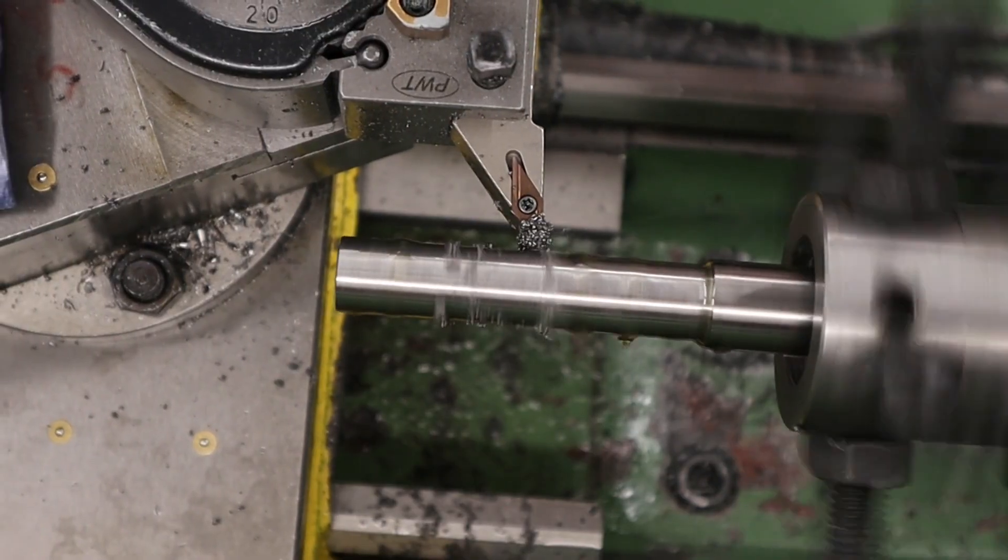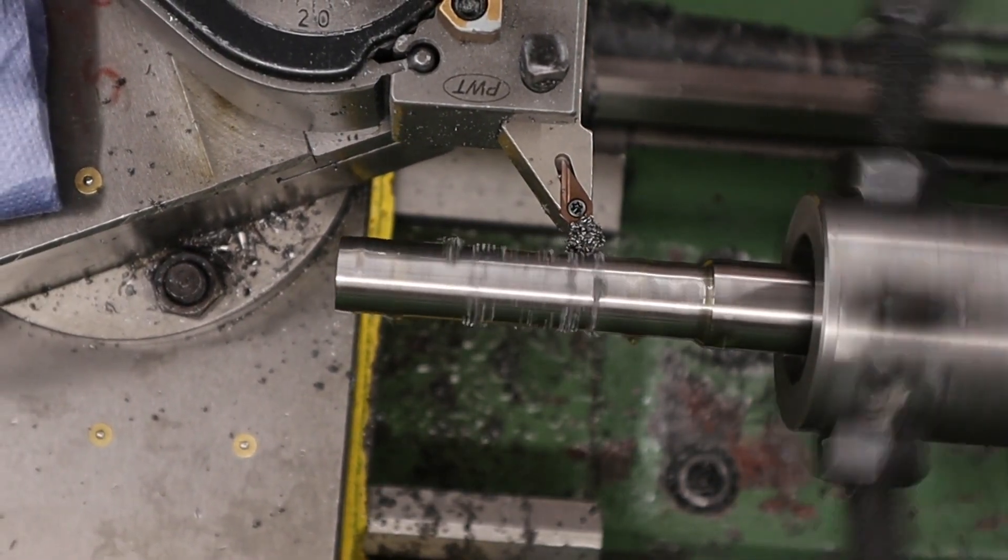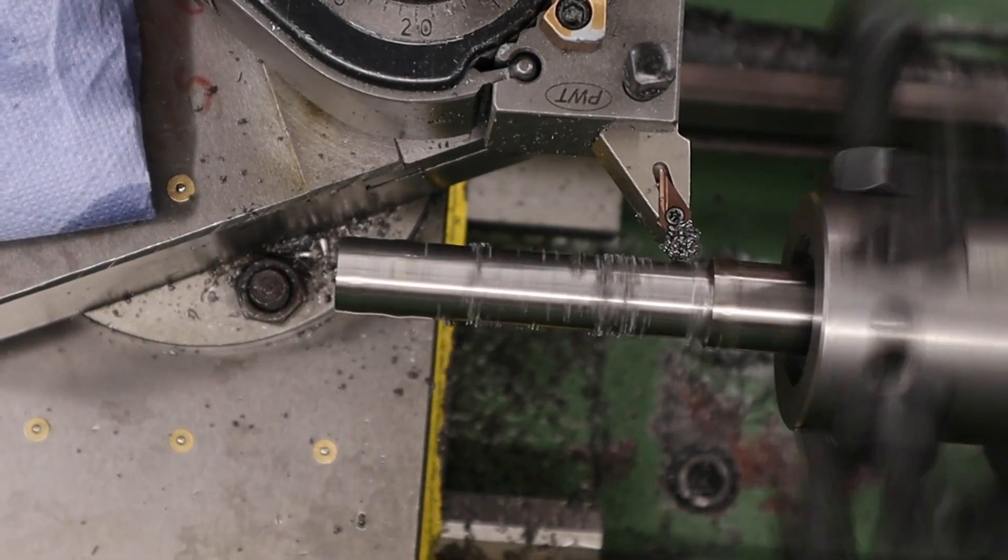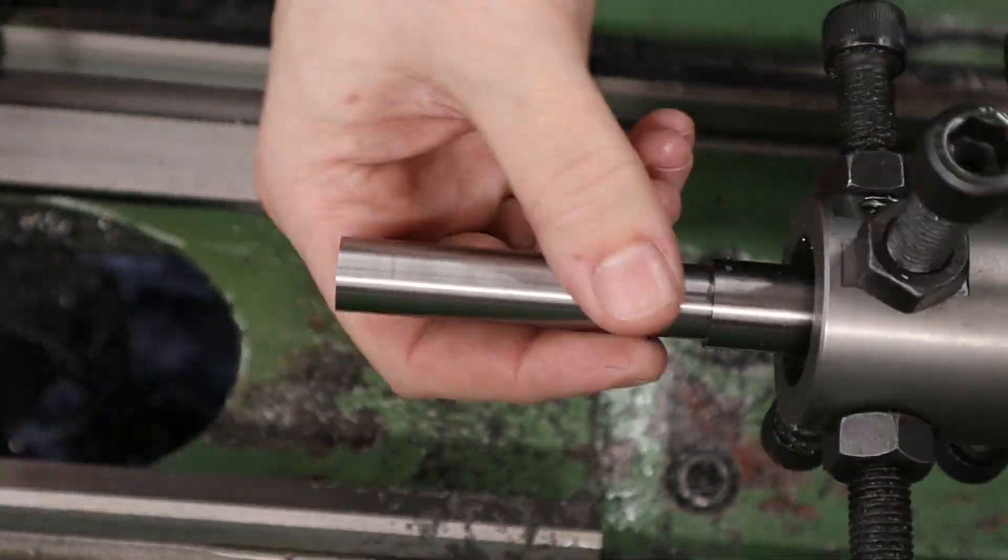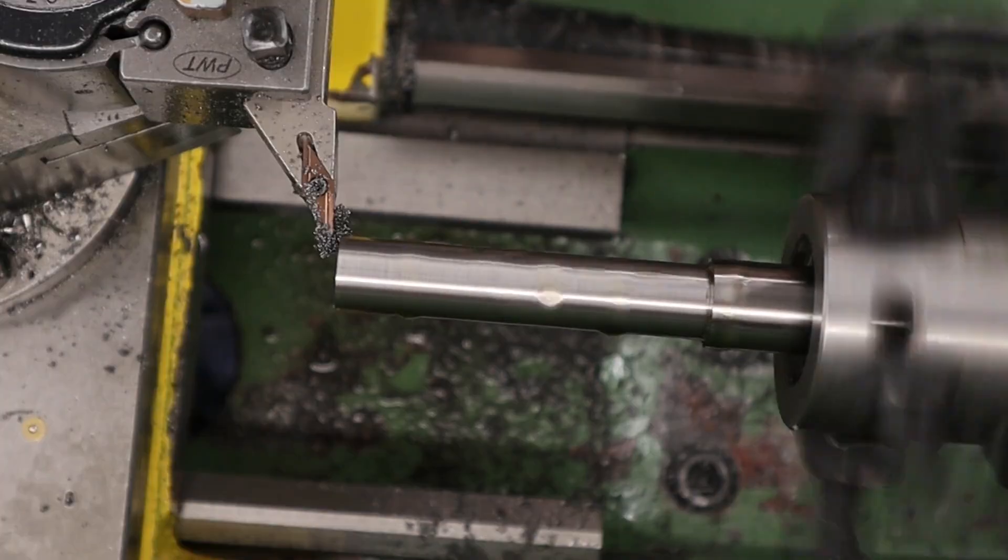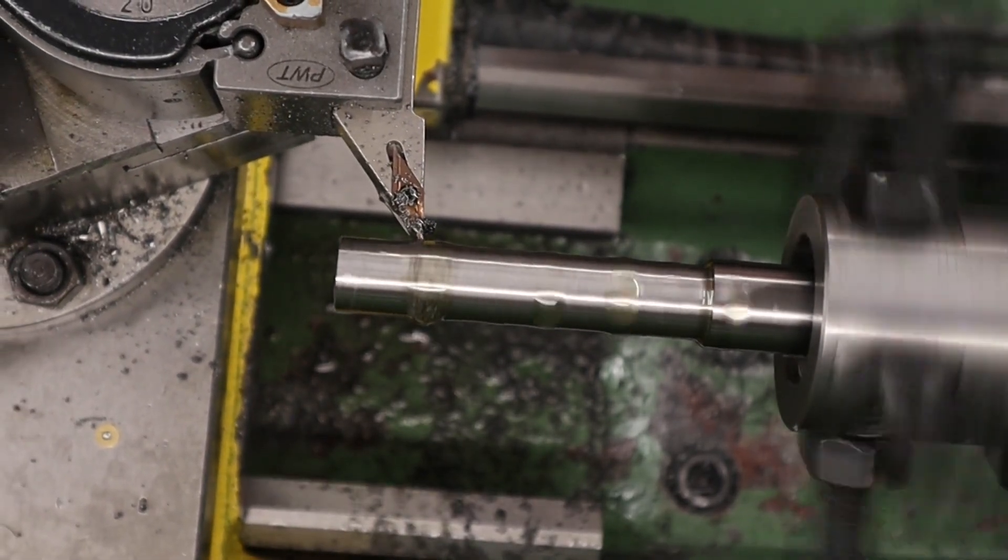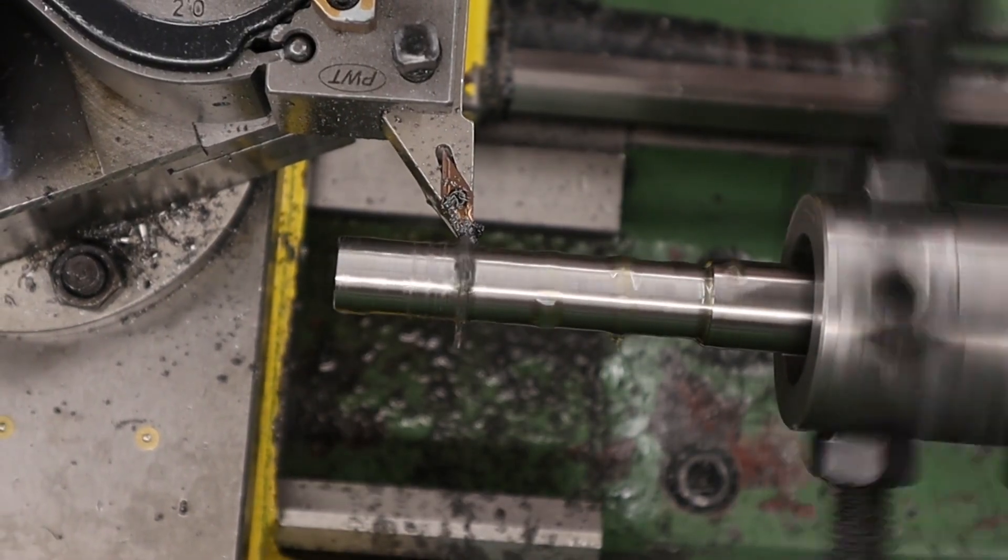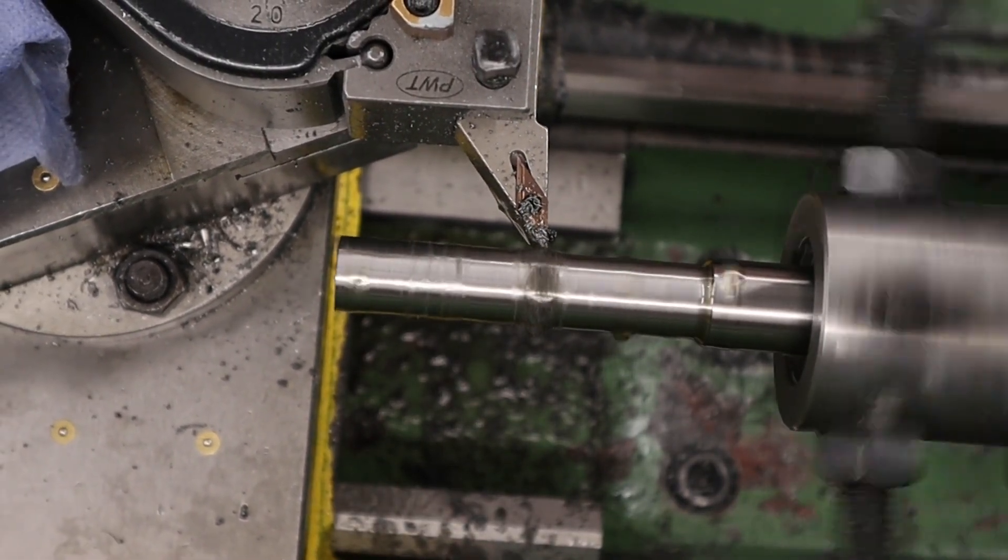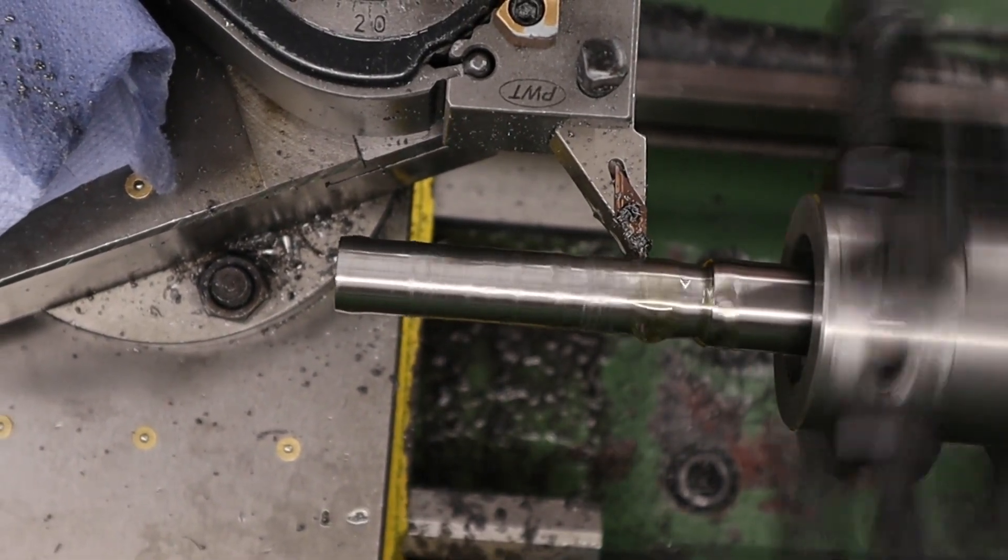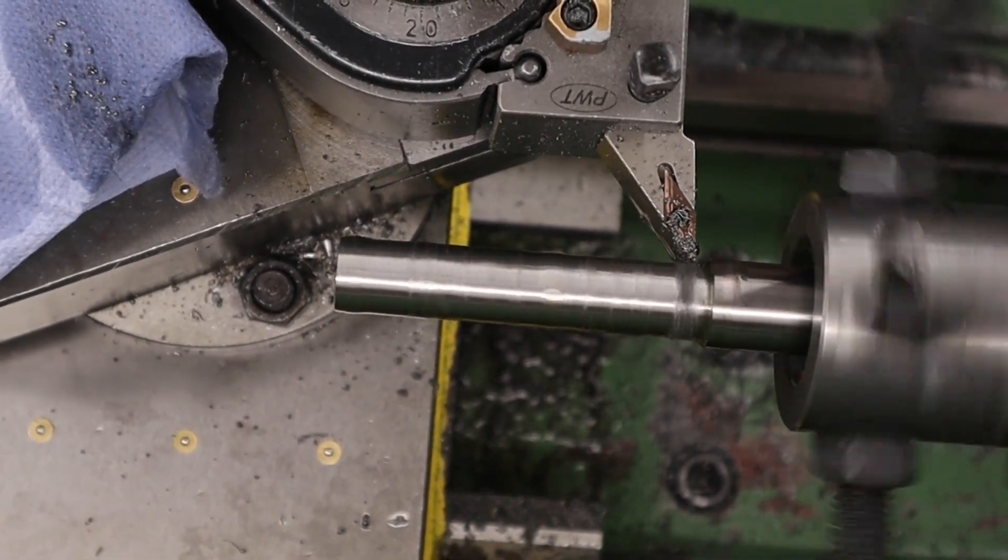Once we're happy that everything's concentric we can start turning down the shank. Now this barrel was off a raw and the OD is 18mm. The breech shank of a 9015 barrel needs to be 15mm to fit in the block, so we just need to turn 3mm off the OD. The actual shank length is roughly 73mm and we're turning down to a nominal size of 15mm as we don't have the block to perfectly match the shank to it.